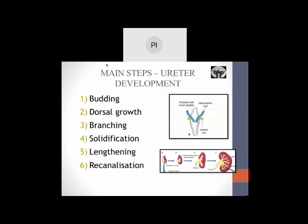The main steps in ureter development can be divided into budding, dorsal growth, branching, solidification, lengthening, and recanalization. Budding occurs from the mesonephric duct as a lateral dorsal approach, then there is dorsal growth. The most important step for ureteral development and UPJO is recanalization.